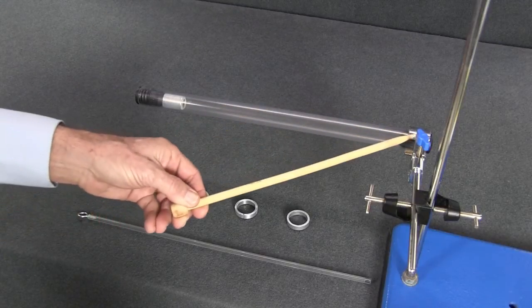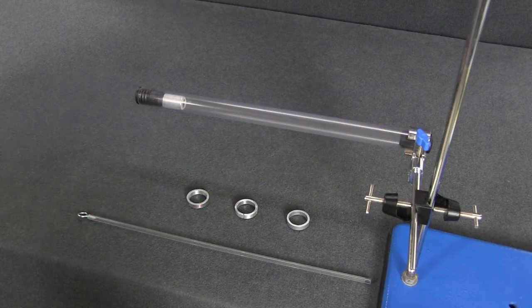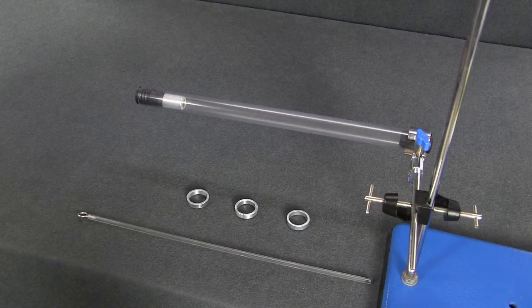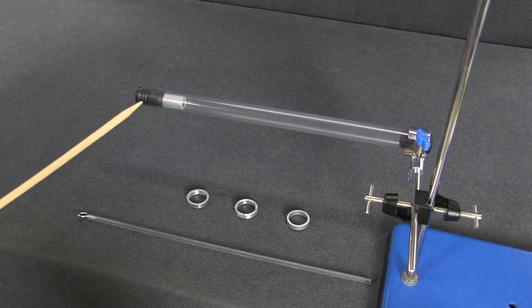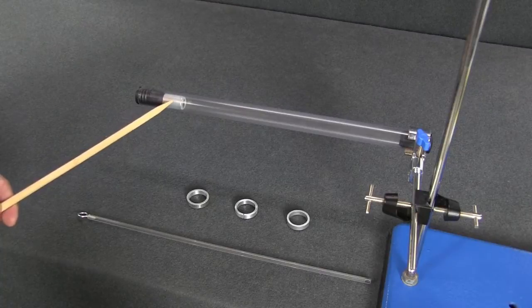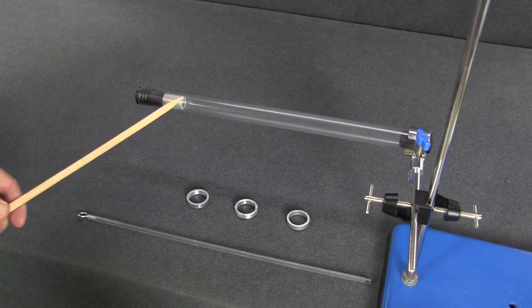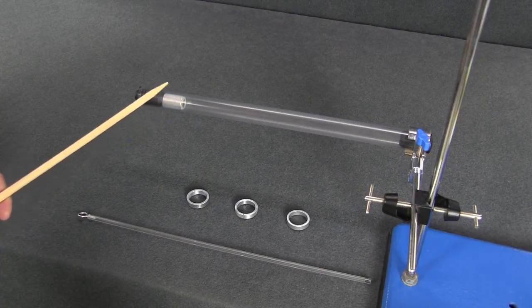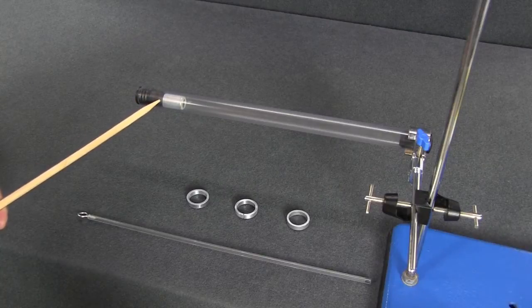I've clamped my induction tube at this end with a clamp, but when you do your experiment you can simply use your hands. Inside the induction tube is a cylindrical magnet. It's a very strong magnet with a south pole at this end and a north pole at the other end.